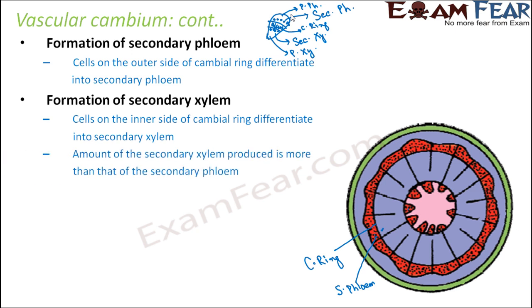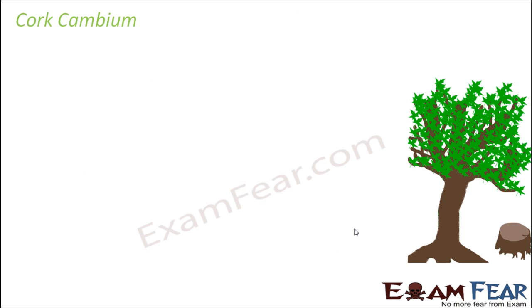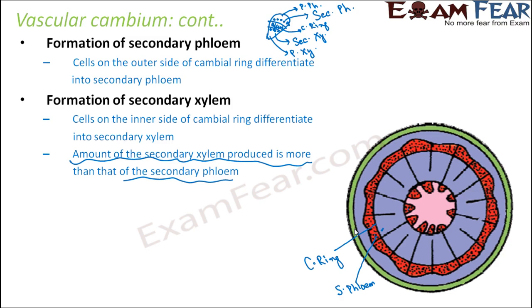The amount of secondary xylem produced is more than that of the secondary phloem. As a result, since more and more secondary xylem is formed, the primary and secondary phloem gradually get crushed by the accumulation of too much secondary xylem. However, the primary xylem will remain intact, and both primary and secondary xylem remain. This was about the vascular cambium.